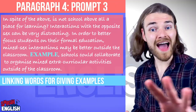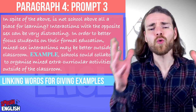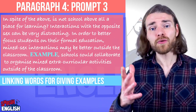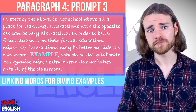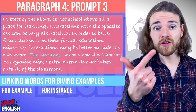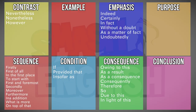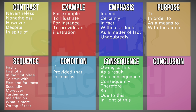Now we are giving an example of how schools could organize mixed sex interactions outside of the classroom. To introduce examples we can say 'for example', 'for instance', 'to provide an illustration' or 'to illustrate'. So now for contrast we also have 'despite' and 'in spite of'. For purpose we have 'to', 'in order to', 'as a means to' and 'with the aim of'. And for examples we have 'for example', 'to illustrate', 'for instance' and 'to provide an example'.